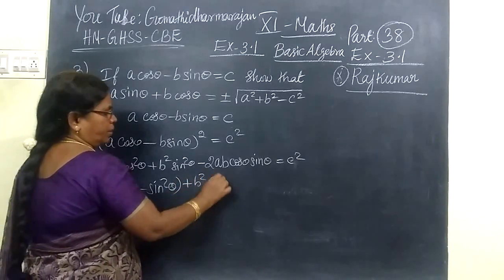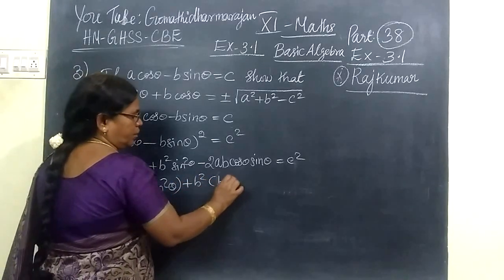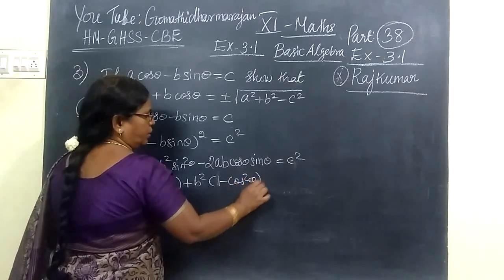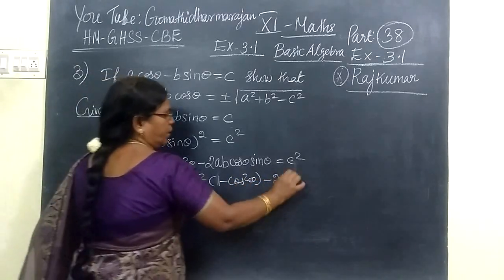So if we say sin square theta, we write it as 1 minus cos square theta. This and all you write as it is, minus 2AB cos theta sin theta equals C square.